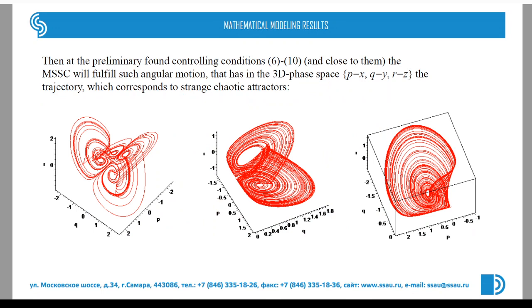At these controlling conditions, which are expressions and equations 6 through 10, we can initiate in the dynamics of multi-spin spacecraft the strange attractors.